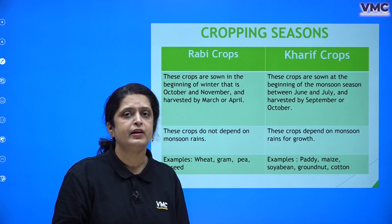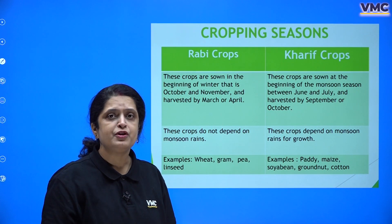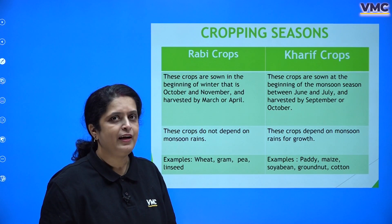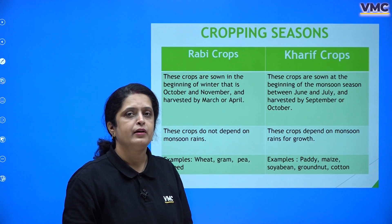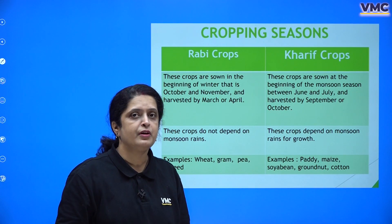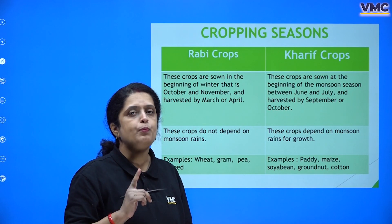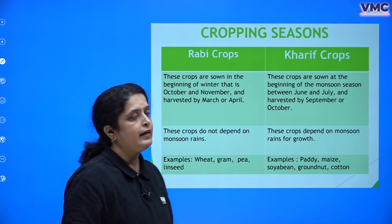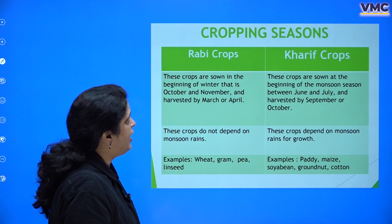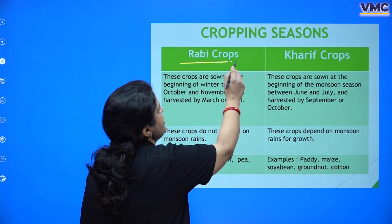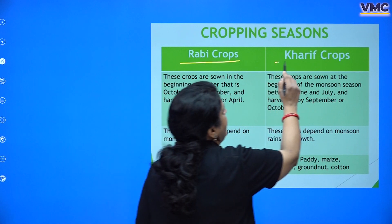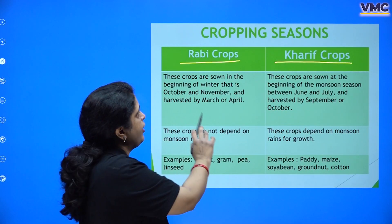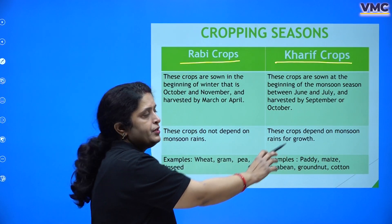India is a country which gets to see many different seasons, and a cultivation pattern depends on them too. The two main predominant seasonal agriculture types are the Rabi crops and the Kharif crops.